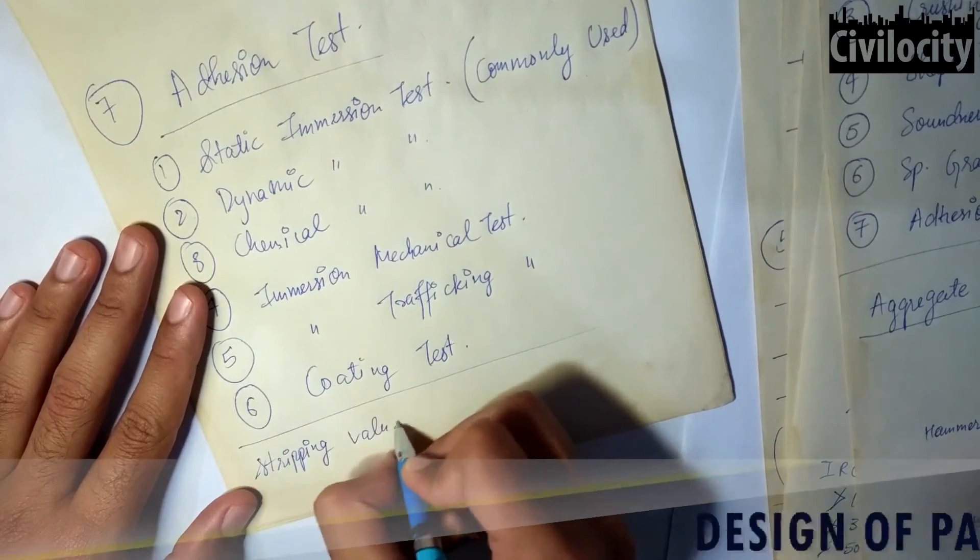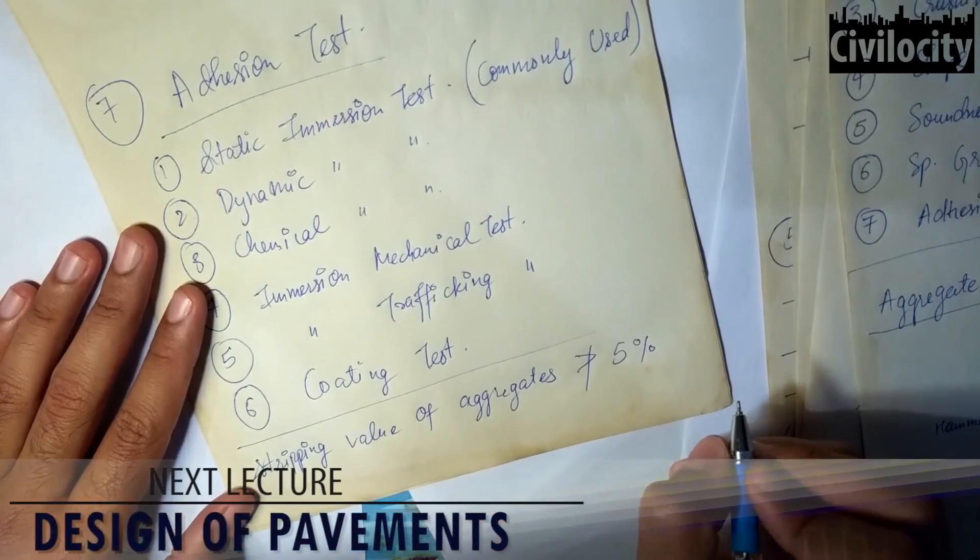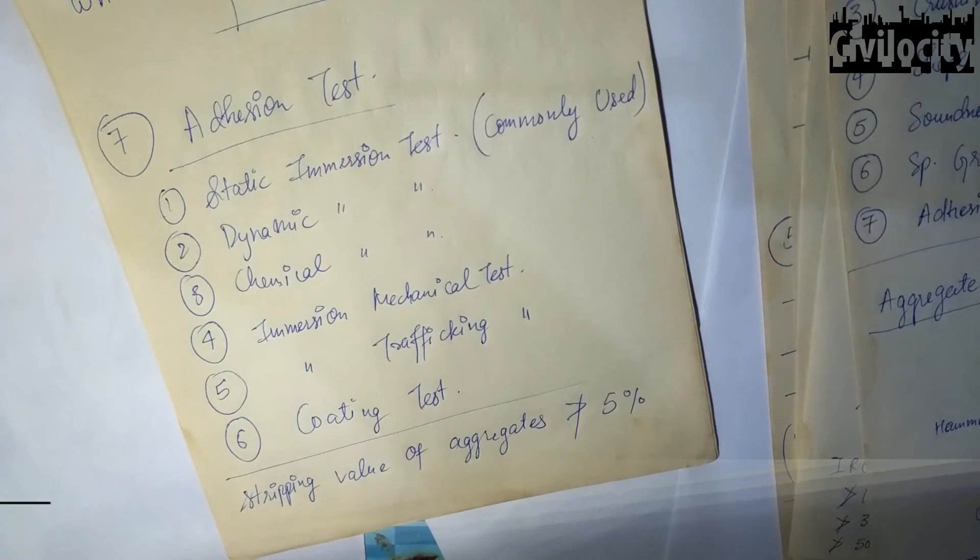We just need to know that the stripping value of aggregates should not be greater than five percent. This was all about the tests on aggregate. If you want to ask me anything, you can ask me in the comments.